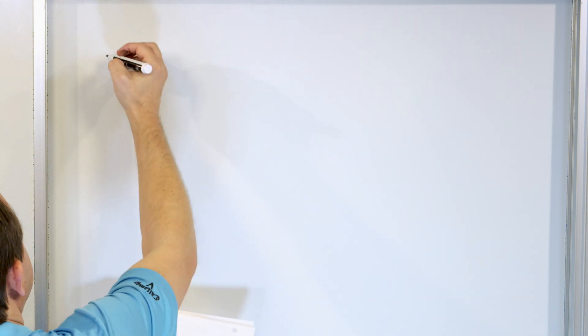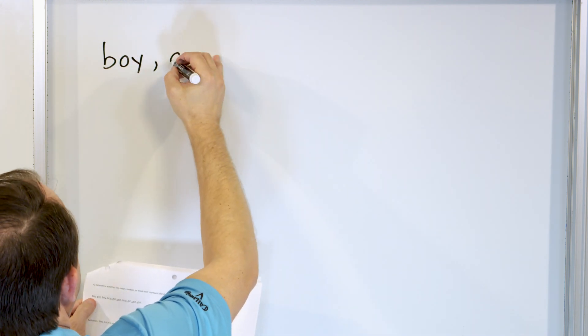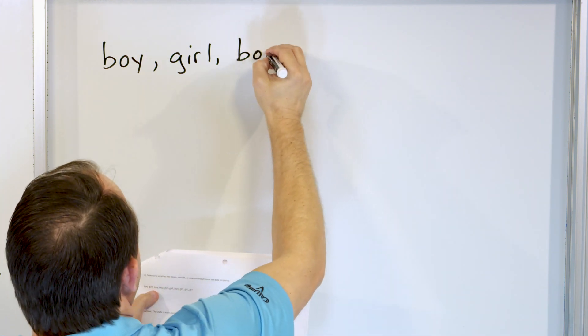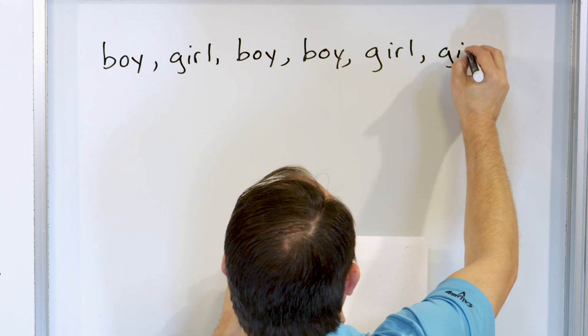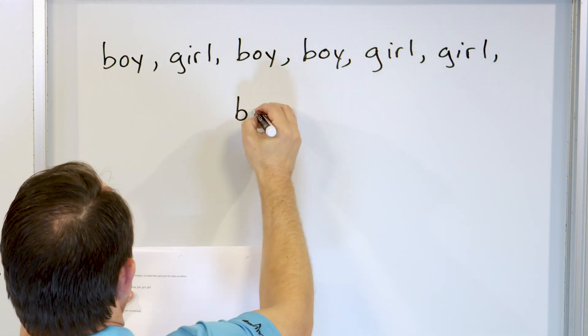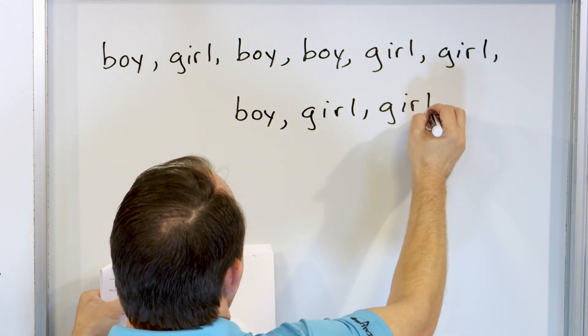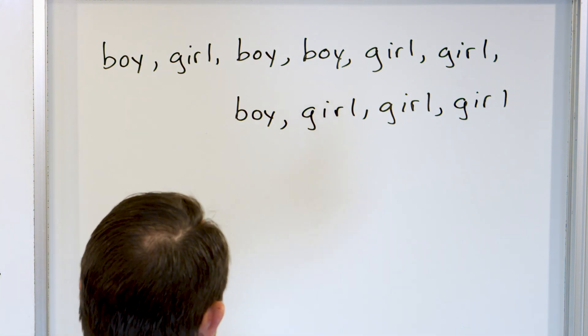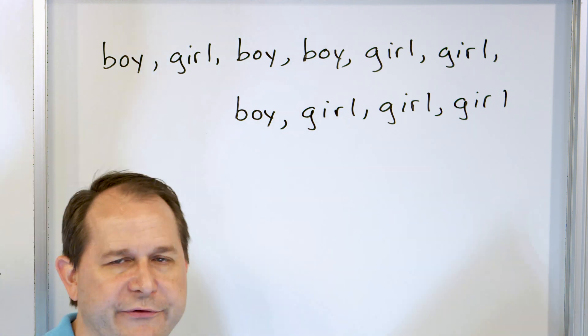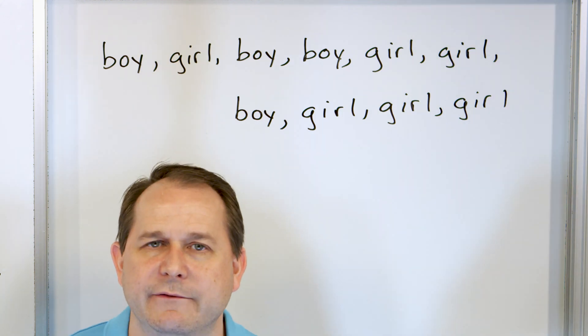Let's take a look at a different kind of data. Let's say we survey a bunch of families and ask: the first child that you had, was it a boy or was it a girl? The first family says they had a boy first. The next says a girl. Then boy, boy, girl, girl, boy, girl, girl, girl. So those are our data values. Notice that there are no numbers here.